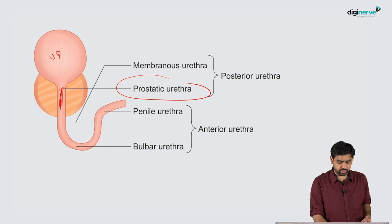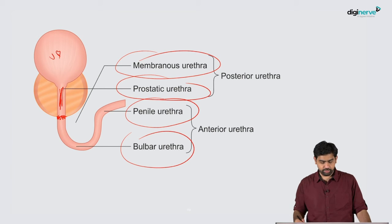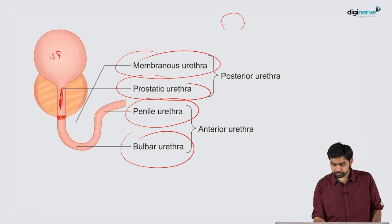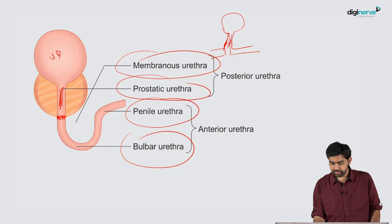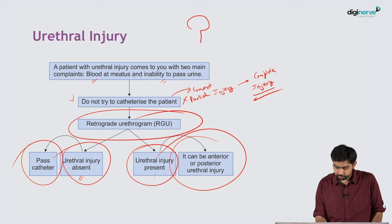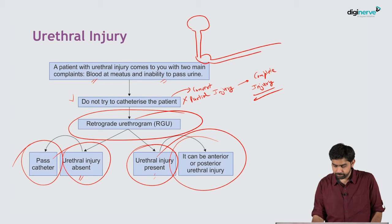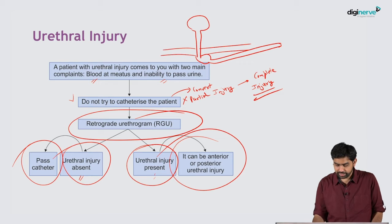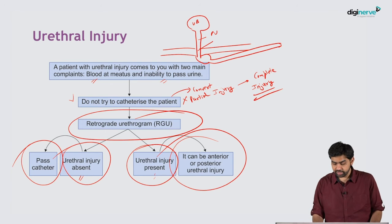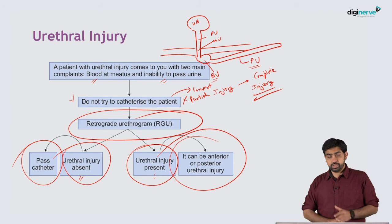The parts of the urethra are: the prostatic urethra, followed by the membranous urethra — which passes through the urogenital diaphragm — then the bulbar urethra, and finally the penile urethra. The prostatic urethra exits the bladder and enters the urogenital diaphragm, where it becomes the membranous urethra, followed by the bulbar and penile urethra.